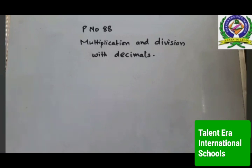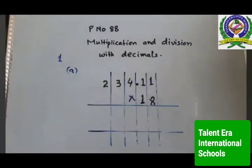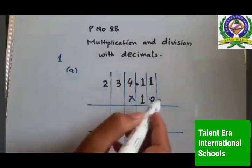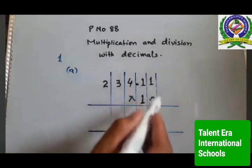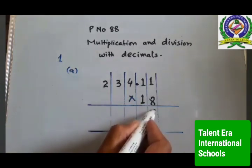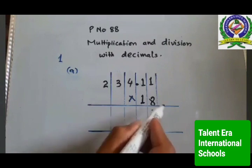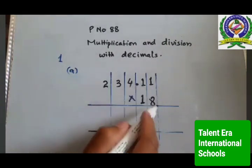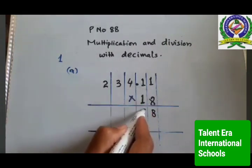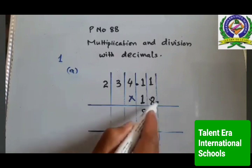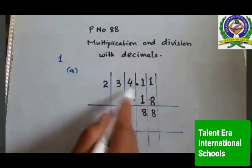In the first part, you have to multiply a whole number with a decimal number. So first of all, we will multiply 8 with the number. 8 with 1 is 8, next 1: 8 multiplied with 1 is 8, next 1: 4 — 8 with 4 is 32.